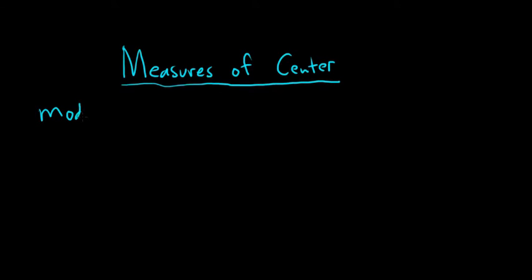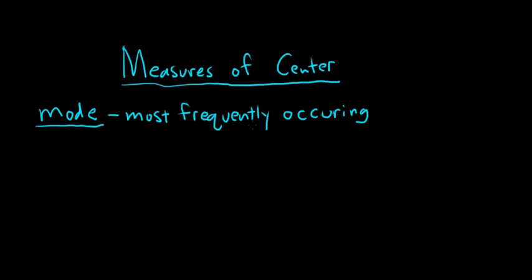The first one is called the mode. And the mode is just the most frequently occurring. So the mode is nice because you can use it with things that aren't numbers. For example, say we had yes, yes, no. In this case, the most frequently occurring is yes. So that would be the mode. So that's the nice thing about the mode. You can use it with things that are not numbers.